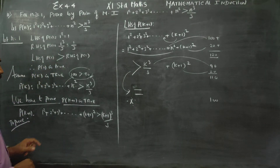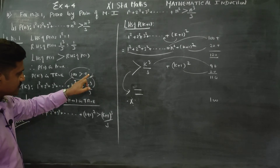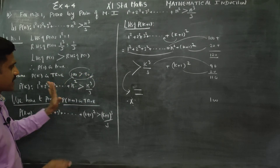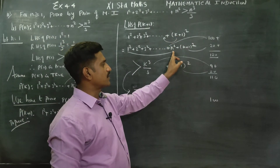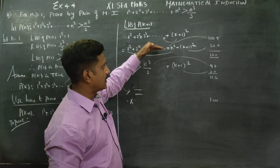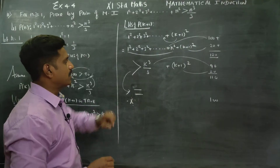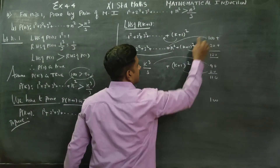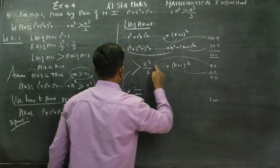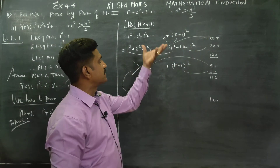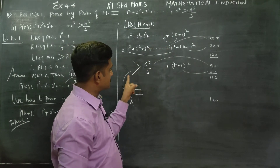Using the inequality analogy: assume 1 squared plus 2 squared plus 3 squared is 100 grams, and k cubed by 3 is 90 grams — 100 grams is greater than 90 grams. Now k plus 1 whole squared is an additional term. If we add, say, 20 grams to both sides, we get 120 grams versus 110 grams — 120 is greater than 110. So this side is heavier than that side, confirming the inequality holds when we add k plus 1 whole squared to both sides.